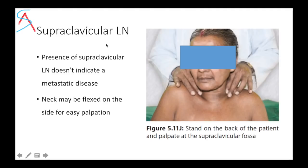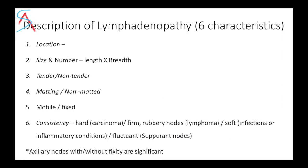Supraclavicular lymph nodes are very very important. Stand on the back of the patient for palpation. If you find any lymphadenopathy, describe it with six characters: location, size and number, whether tender or non-tender, matted or non-matted, mobile or fixed, and consistency. Generally in carcinoma it would be hard; in infection or inflammatory causes it would be soft. Axillary nodes with or without fixity are considered significant. If there are multiple lymph nodes in one group, present like: 'three lymph nodes palpable in the anterior axillary group, the largest being 2×3 cm.'